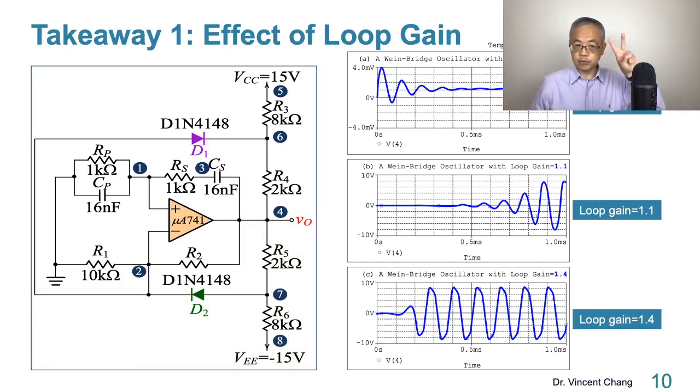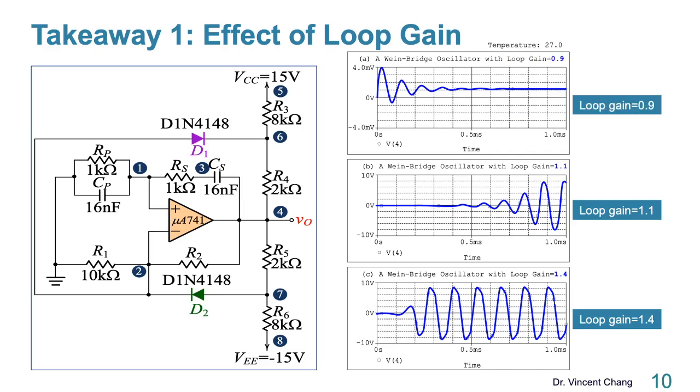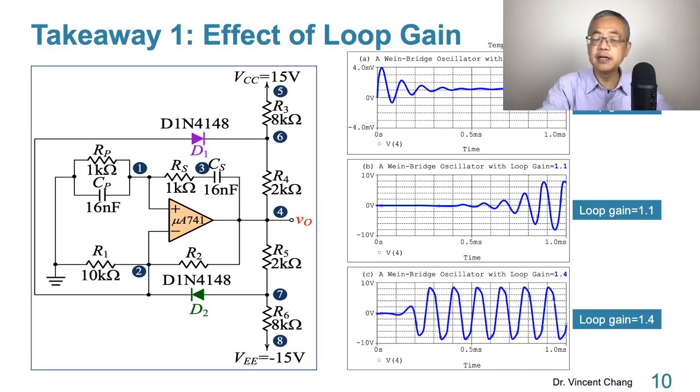Here's the takeaway. The first learning objective, I want to use this lecture to strengthen your learning, your concept on the effect of loop gain on the sinusoid waveform. Less than 1, 0.9, damped oscillation. Then 1.1, 1.4 is greater than 1, growing oscillation. But the higher loop gain will cause the sinusoid waveform to suffer from non-linear distortion.